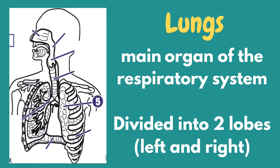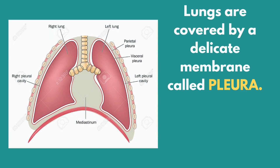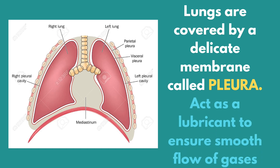The lungs are a pair of spongy, air-filled organs located on either side of the chest. They are the major organs of the respiratory system and are divided into two lobes: the left and right lung. The lungs are covered by a delicate membrane called the pleura. The pleura is a vital part of the respiratory tract whose role is to cushion the lungs and reduce any friction that may develop between the lungs, ribcage, and chest cavity. The pleura consists of a two-layered membrane that covers each lung.